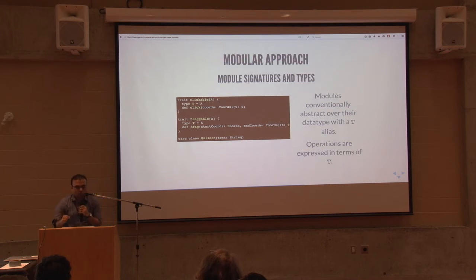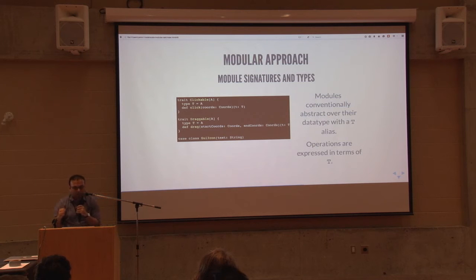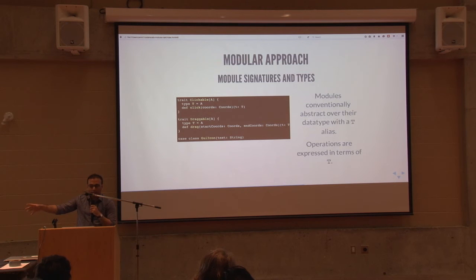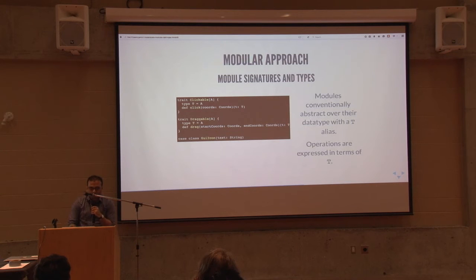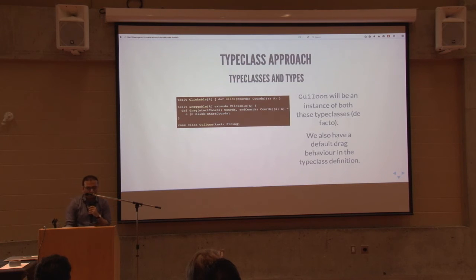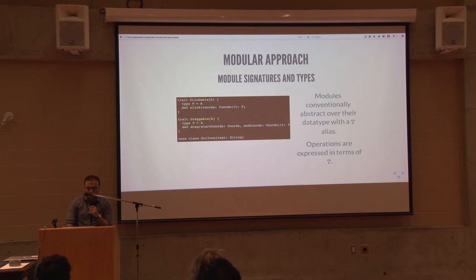With the ML approach, instead of having a type class you have a module type. I'll have the clickable module type and the draggable module type, and later I'll show modules which instantiate those module types — very similar to type classes. You have traits with type parameter A, but internally we do a little twist: we alias whatever type A we're given to a type T by convention, because in our modules we like to deal with values of type T. This is the kind of pure modular approach you'd find in the ML world.